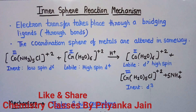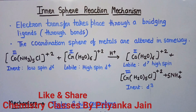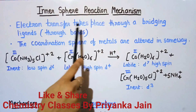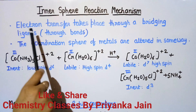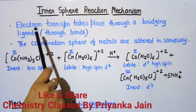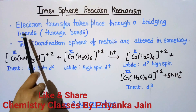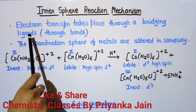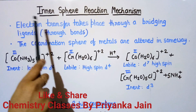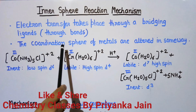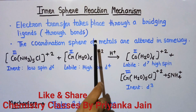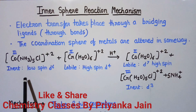In this video we will understand the inner sphere reaction mechanism. We have studied the outer sphere reaction mechanism in our previous video. In the inner sphere mechanism, which also takes place in coordination complexes, the electron transfer takes place through a bridging ligand. The two coordination compounds are connected by a bridging ligand, and via this the redox reaction takes place, altering the coordination sphere of the metals.